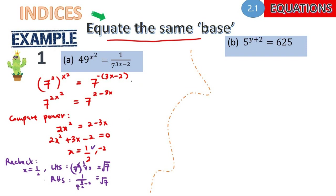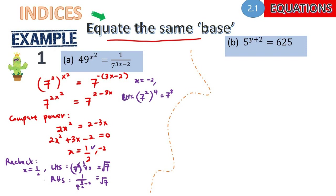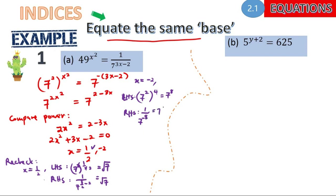Now for x = −2: left-hand side gives 7 squared to the power of 4, which is 7 to the power of 8. Right-hand side gives 1 over 7^(−6−2), which is 7^(−(−8)) = 7 to the power of 8 also. So x = −2 is accepted as well. In most cases you can just recheck using your calculator.